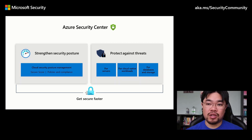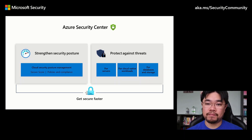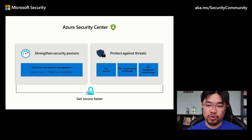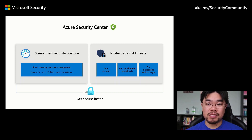Azure Security Center's Cloud Security Posture Management, or CSPM capabilities, allow it to strengthen your organization's security posture by assessing the status of your resources and providing recommendations to improve their security posture. Security Center also functions as a Cloud Workload Protection Platform, or CWPP, through Azure Defender, to provide threat protection for both your Azure and non-Azure workloads.